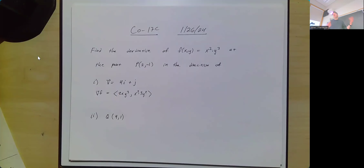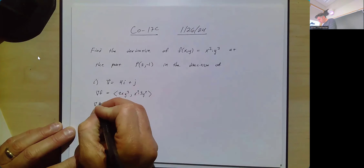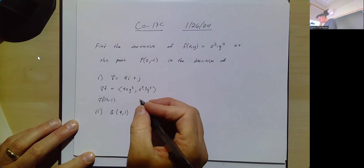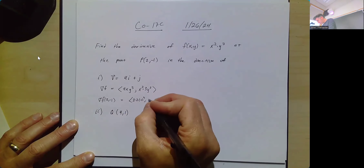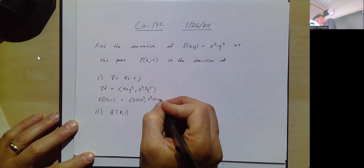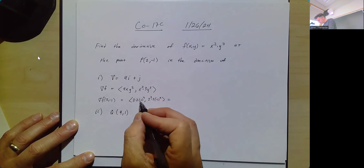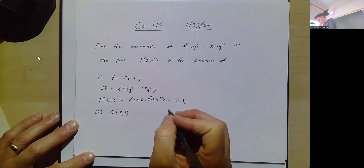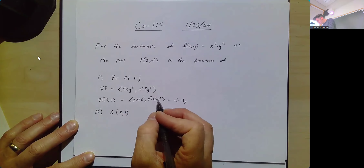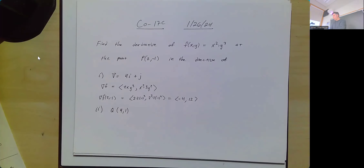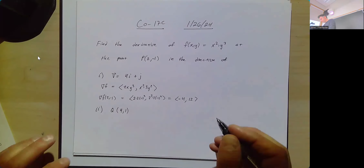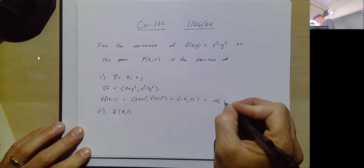That's the gradient at any point on this curve. At the particular point (2, -1), the gradient is going to be: plug in 2 for x and -1 for y. So I get 2·2·(-1)³, and 2²·3·(-1)². That comes out to ⟨-4, 12⟩, or if you prefer, -4i + 12j.